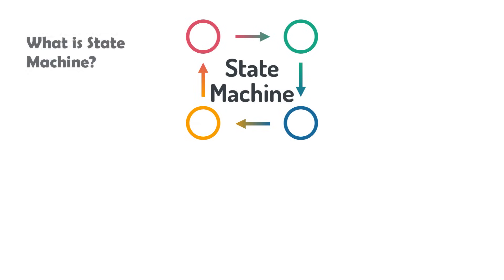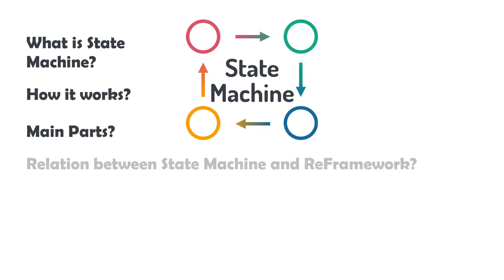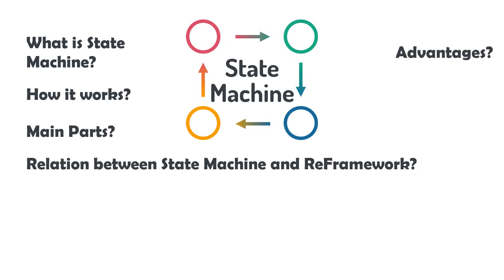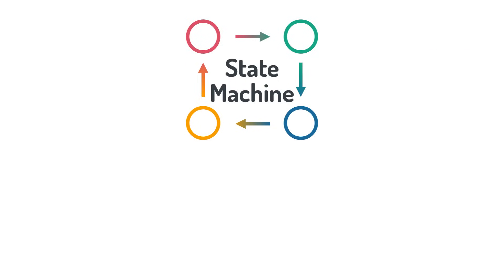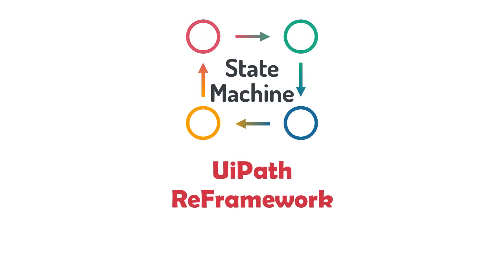But what is a state machine? How does it work? What are the main elements of a state machine? What is the relation between state machine and the RE Framework in UiPath? What are the advantages of a state machine? When should I use a state machine? What is the difference between state machine, sequence, and flowchart? I will answer all these questions in this video, which is considered an introduction to the RE Framework in UiPath.